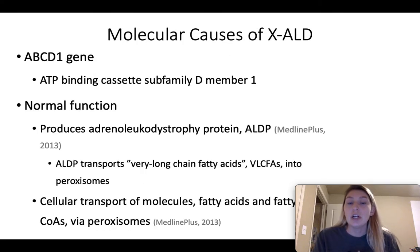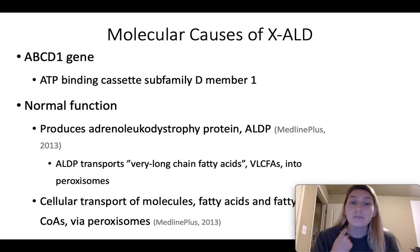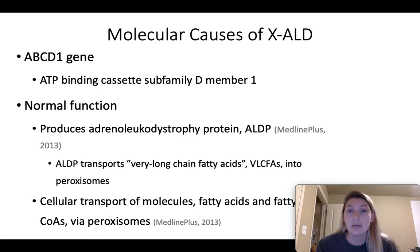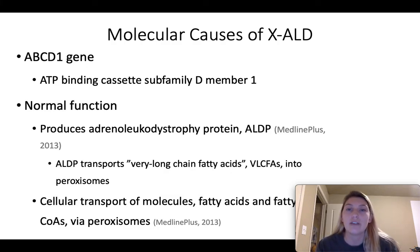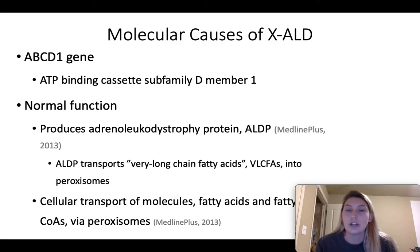The molecular causes of XALD are all due to the ABCD1 gene — full name: ATP-binding cassette subfamily D member 1. The normal function of this gene is to produce the adrenoleukodystrophy protein, ALDP. This ALDP protein transports very long chain fatty acids into peroxisomes, where they are destroyed — so it is responsible for the cellular transport of these fatty acids via the peroxisome.